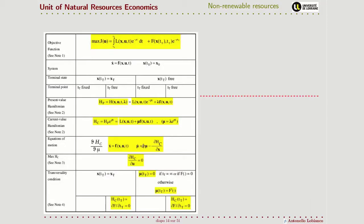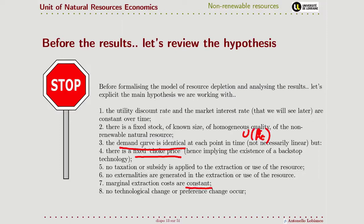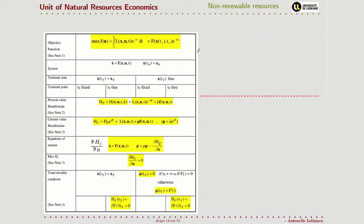In terms of the optimal control theory framework for resolving the problem, we are still within the case of having defined the terminal state as requiring the stock of natural resources to be completely exhausted at the end of the planning period, and the time at which this happens is an endogenous factor — so we are still within this column here.